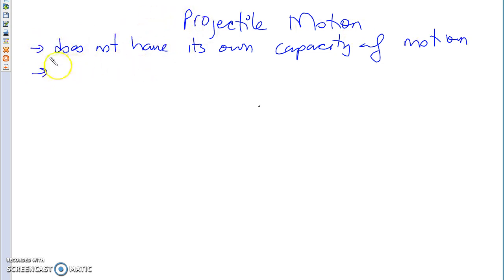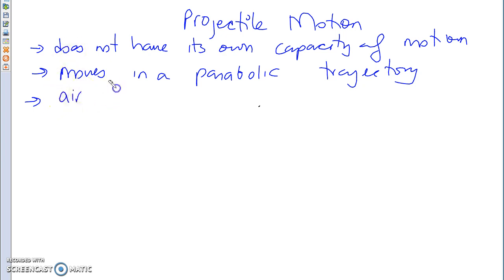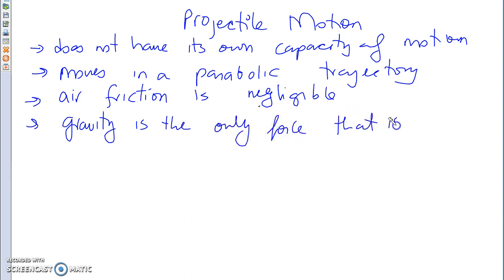So it moves in a parabolic trajectory. Something else: for the horizontal velocity to be constant, what are we assuming does not exist? Air friction. That's correct — we're saying air friction is negligible. And of course the only force causing this motion is gravity — gravity is the only force causing the motion.